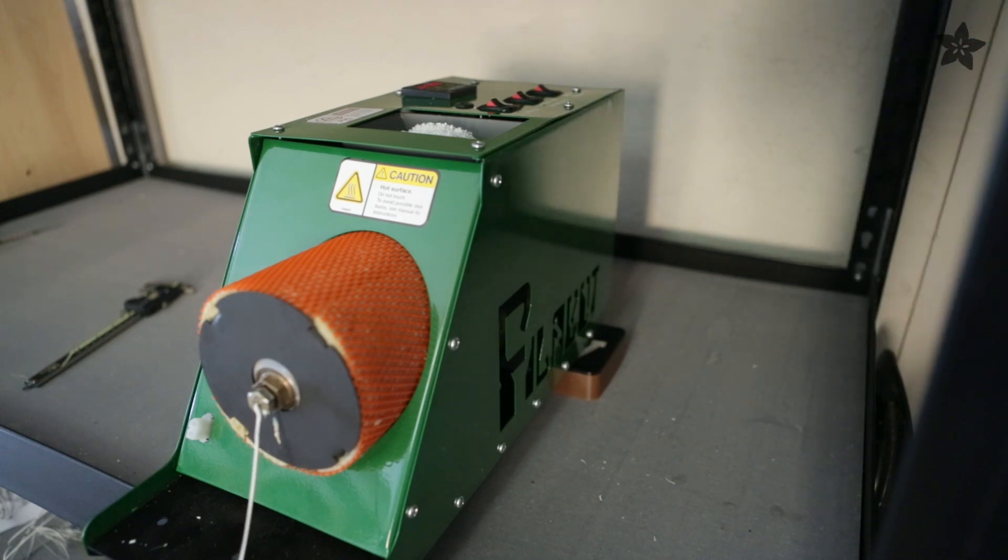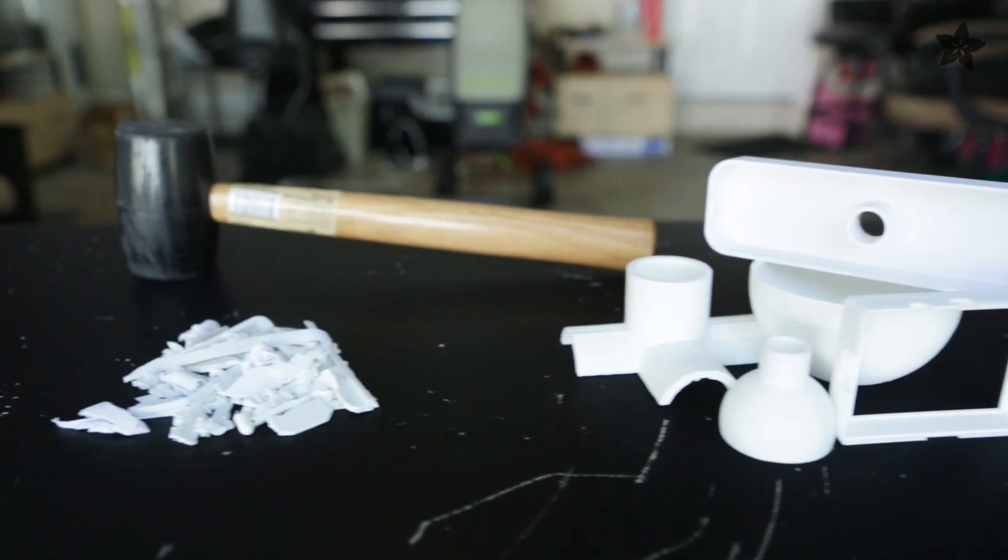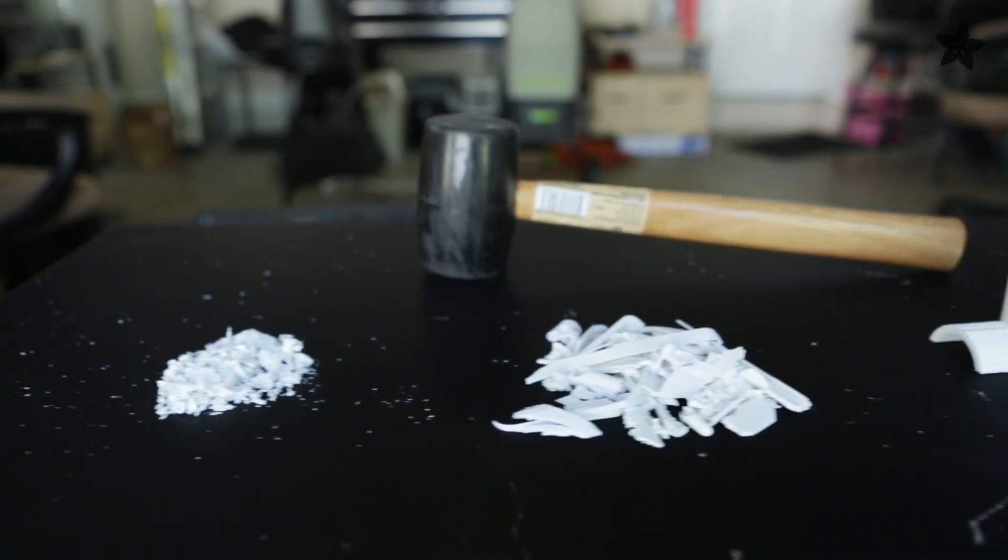Filament extruders like the Filabot grind plastic mulch and extrude it out making recycled filament. Before we can start, we'll need to break down the parts. We can crush them down with a rubber mallet and use a canvas bag to keep pieces from going everywhere.